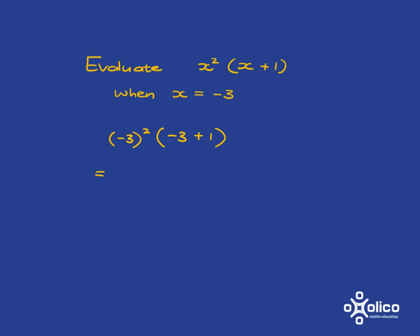Minus 3 squared is minus 3 times minus 3, which is 9. And now if you take negative 3 and you add 1, you get negative 2. And remember, when you've just got these two things next to each other, it means multiplication. So 9 multiplied by negative 2 gets me to negative 18.